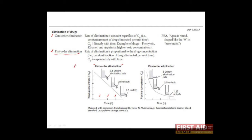Thus, if we started with a concentration of 10 milligrams per milliliter of plasma, we would find that after the first hour we would have 7.5 milligrams per milliliter. After the second hour, 5. After the third, 2.5, and so on. Phenytoin, ethanol, and aspirin exhibit zero-order elimination at high or toxic concentrations, and you can remember this with the mnemonic here.